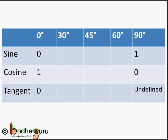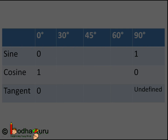To summarize: sin of 0 degrees is equal to 0, cos of 0 degrees is equal to 1, and tan of 0 degrees is equal to 0. For 90 degrees: sin of 90 degrees is equal to 1, cos of 90 degrees is equal to 0, and tan of 90 degrees is an undefined value. That's all in this video, bye bye!